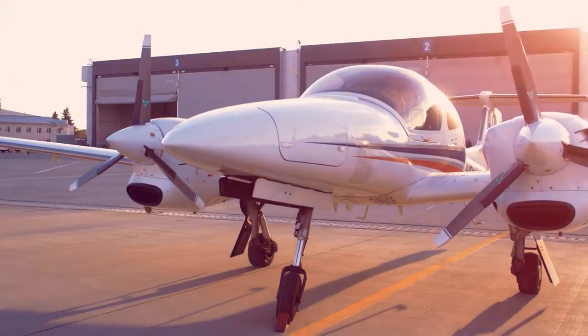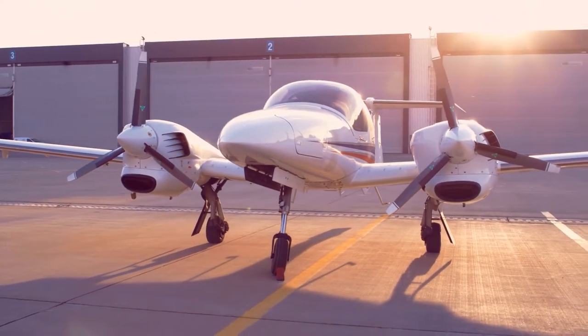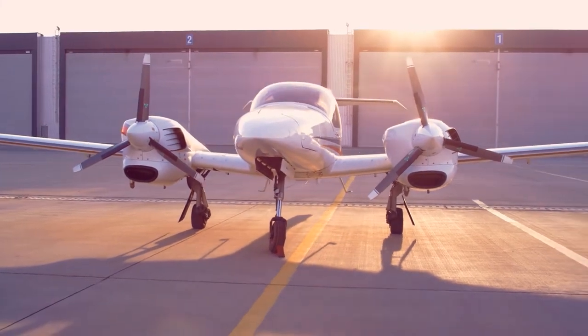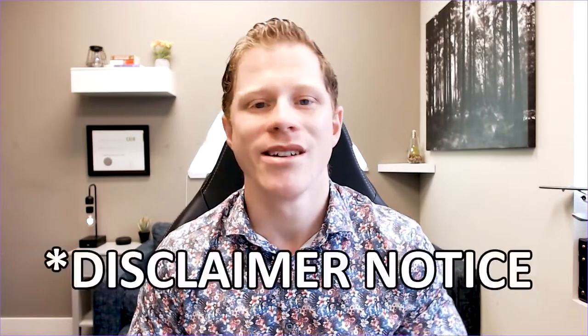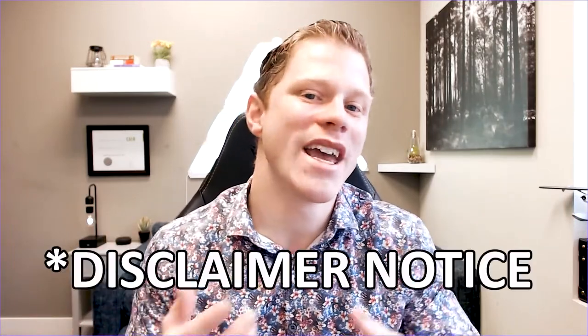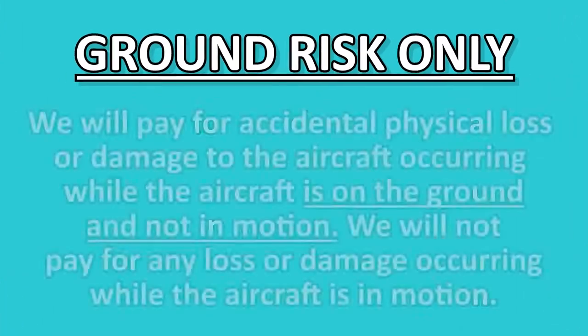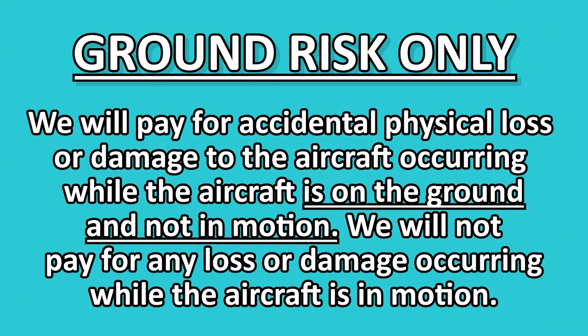Number one: physical damage coverage. All risk not in motion includes physical damage coverage for the aircraft while it is on the ground, not moving, and the engine is off. One insurance company's definition reads — ground risk only: we will pay for accidental physical loss or damage to the aircraft occurring while the aircraft is on the ground and not in motion; we will not pay for any loss or damage occurring while the aircraft is in motion. Note that this definition can vary from insurance company to insurance company, and whether a loss is paid is up to the insurer's policy wording.